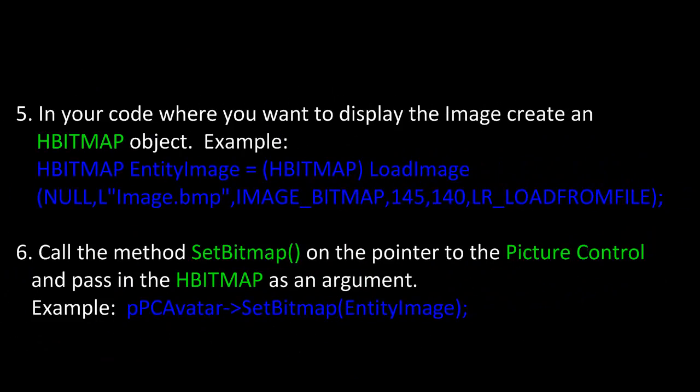Next, in your code where you want to display the image, create an HBITMAP object — in this case, HBITMAP EntityImage. Then call the function LoadImage and cast the return value to an HBITMAP. You'll need to supply some arguments: the name and, if necessary, the directory of the file, the width, the height, and also LR_LOADFROMFILE if you're loading the bitmap from a file.